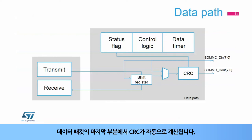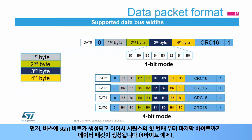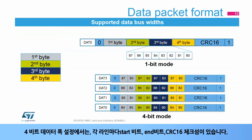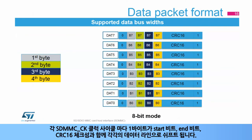The CRC calculator guarantees data integrity between the card and host. At the end of the data packet, the CRC is calculated automatically. Depending on the configured data bus width, the data path sends data blocks over 1 pin (SDMMC D0), 4 pins (SDMMC D0 to D3), or 8 pins (SDMMC D0 to D7). A start bit is generated on the bus, followed by the data packet, then the CRC16 and end bit are appended. In a 4-bit data width configuration, each line has its own start bit, end bit, and CRC16 checksum. In 8-bit mode, for each SDMMC CK clock cycle, a byte is shifted out with a start bit, end bit, and CRC16 checksum on each data line.